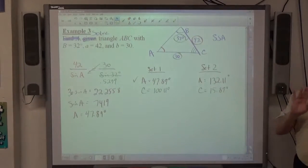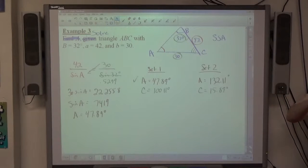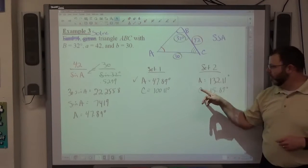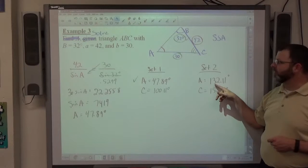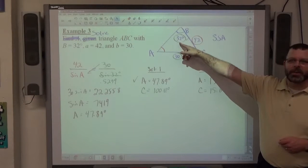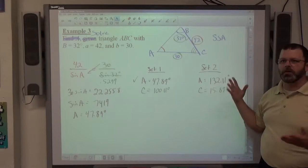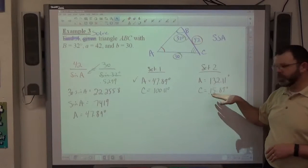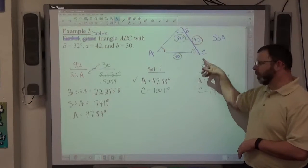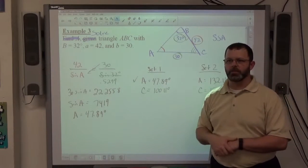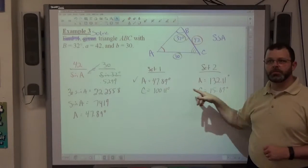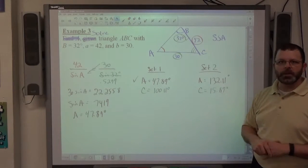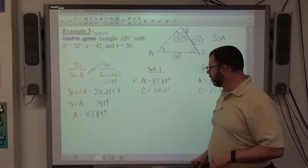The one scenario I did not deal with in this set of homework or examples is the one where, let's say this is 160. That's 32, now it's 192, subtract, you get negative 12, throw it out. So if C comes out to a negative angle, big old X there, and just finish up your set one answers. But if C comes out to two numbers that are positive, both answer sets are valid, both answer sets are necessary.